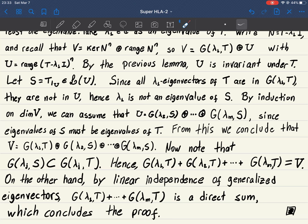And on the other hand, we have proved that generalized eigenvectors corresponding to distinct eigenvalues are linearly independent, which means that this sum here actually is a direct sum. And this concludes the proof. The theorem is proved.